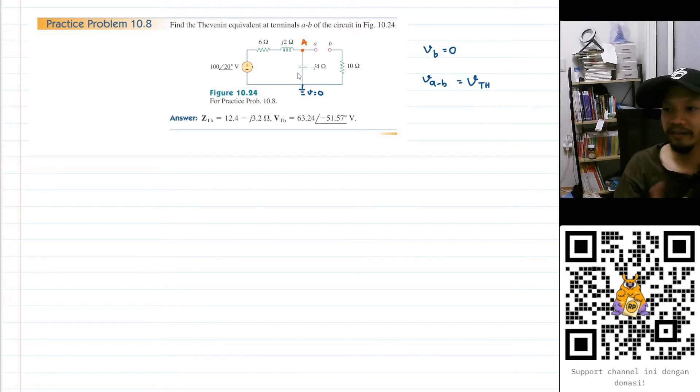If we take a look here, this is just a voltage divider. Let's do voltage divider: the numerator will have this value here, that is minus j4, so I have minus j4. For the denominator we have the sum of all the inductance, so I will have minus j4 plus j2 plus 6.